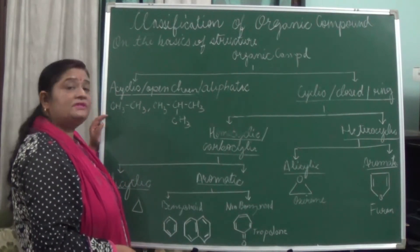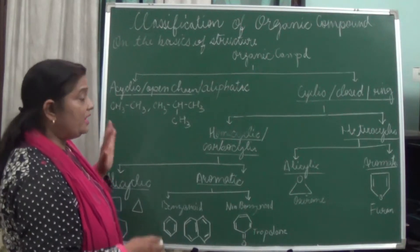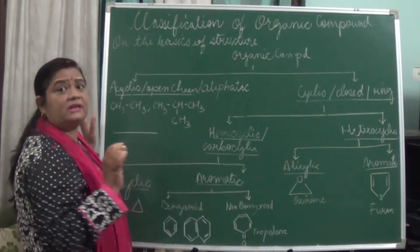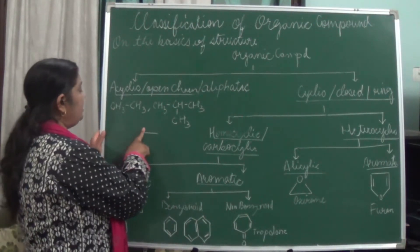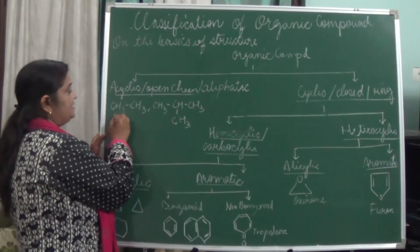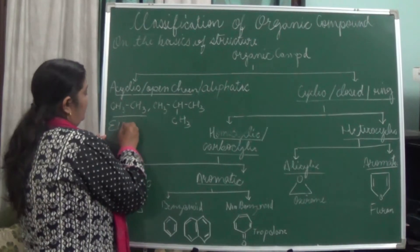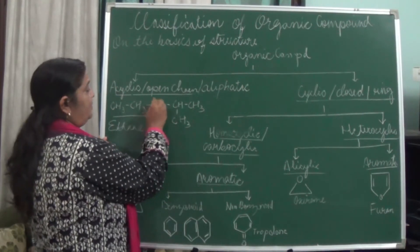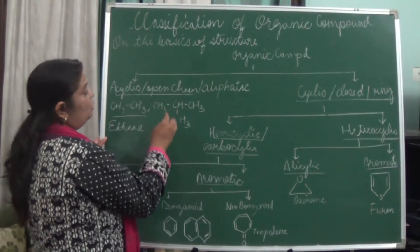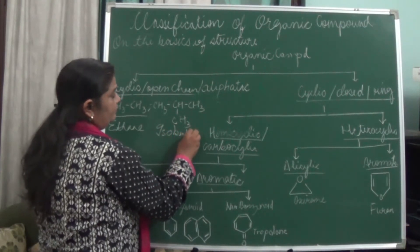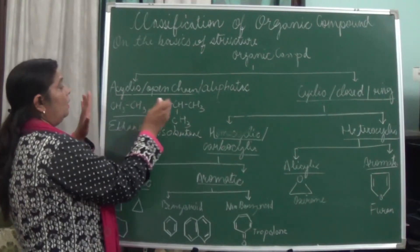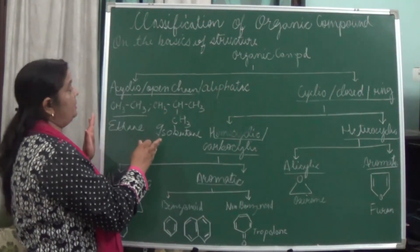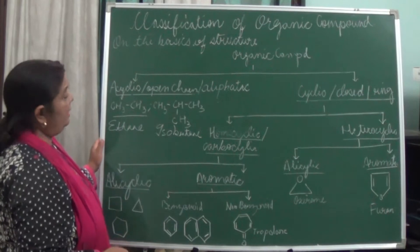When we say acyclic compounds or open chain, it means it is open — it is not closed. Something which is straight, something which is branched, but it is open. Here I have taken the example of ethane: CH3-CH3. And here this is known as isobutane. So these two examples are showing that these carbon compounds are open chain compounds, and so they are also known as acyclic and aliphatic.